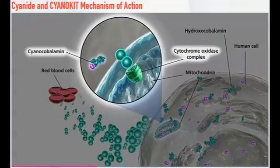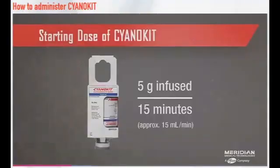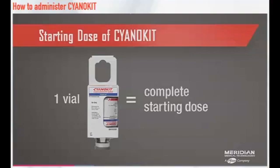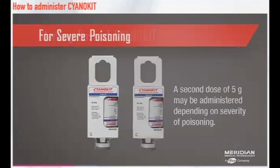Resultant cyanocobalamin is then excreted in the urine. The starting dose of Cyanokit for adults is 5 grams administered as an intravenous infusion over 15 minutes. Administration of the entire vial constitutes a complete starting dose. Depending upon the severity of the poisoning and the clinical response, a second dose of 5 grams may be administered by intravenous infusion for a total dose of 10 grams. The rate of infusion for the second dose may range from 15 minutes, for patients in extremis, to 2 hours, as clinically indicated.